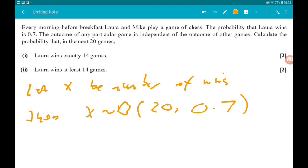So for part 1, we just want the probability that x equals 14. Now your calculator can do this nice and easily. You want to go into distribution, binomial PD, because we want an exact value. Then put in x is 14, n is 20, p is 0.7.